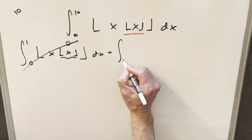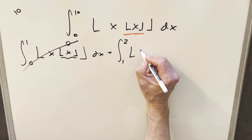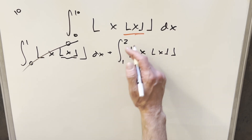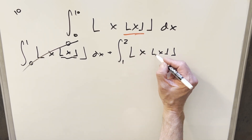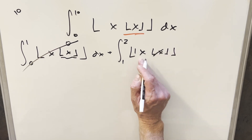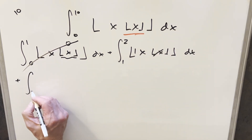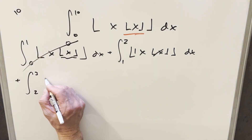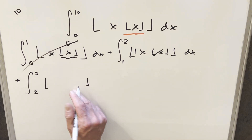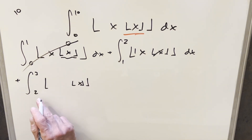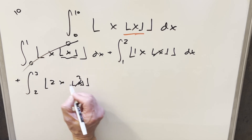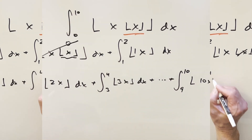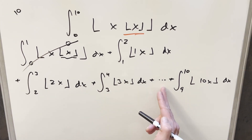We move on to the second integral, going from 1 to 2. The floor function here, in this region from 1 to 2, rounds everything down to 1. So this piece just becomes 1 as the coefficient. And we can keep going — from 2 to 3, this floor function gets rounded down to 2, so I write that as 2x. Let me write a few more of these so we're clear on what's happening, imagining we have 10 integrals written out.